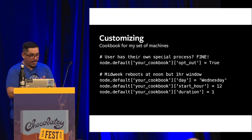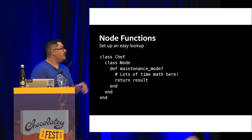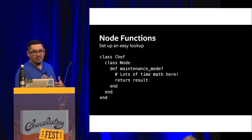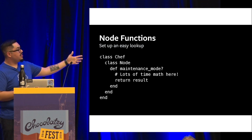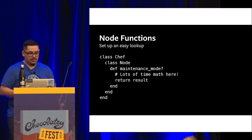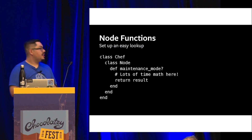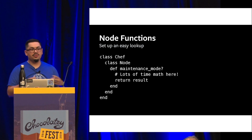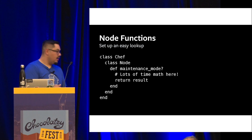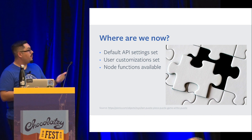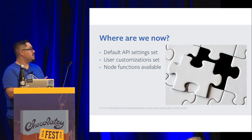So now we can actually start calculating time. Here we extend the node class and create a function called maintenance mode. I didn't include all the time math because it's pretty boring, but essentially what we want to return is a boolean for result — we want to know, are you in your window or not? The other nice thing you can do is some additional logic here to say, is this the first time you're booting up? Maybe the first time you boot up you want to say maintenance mode is true. So now we have default API settings, user customizations, and a node function that we can leverage to check on those.